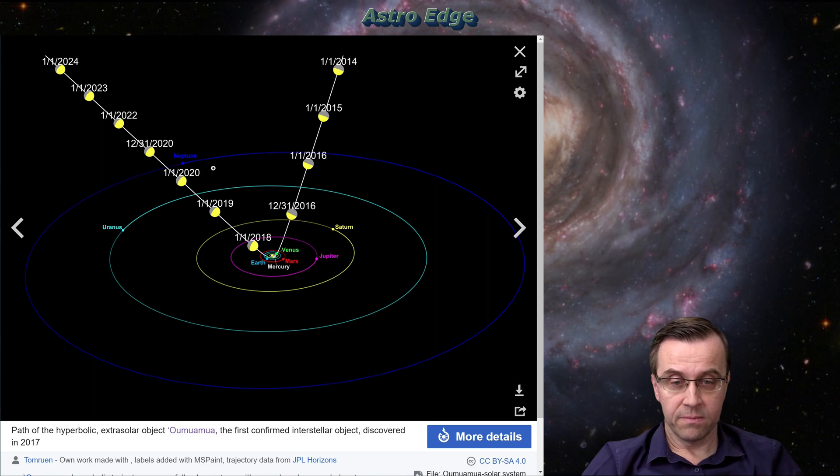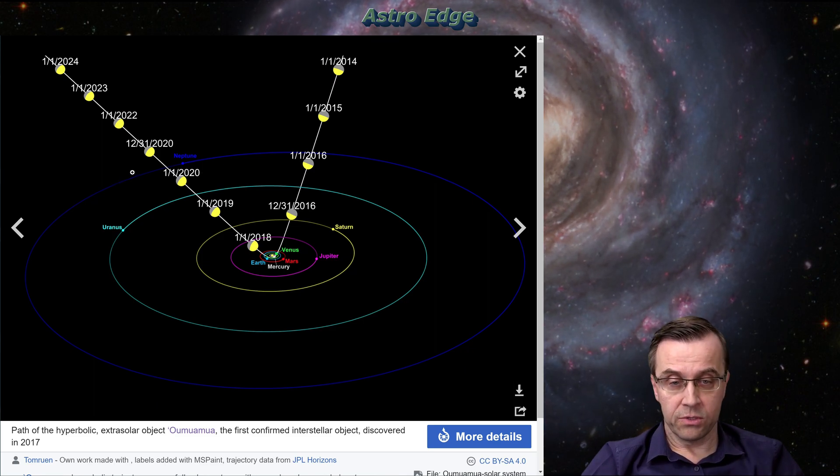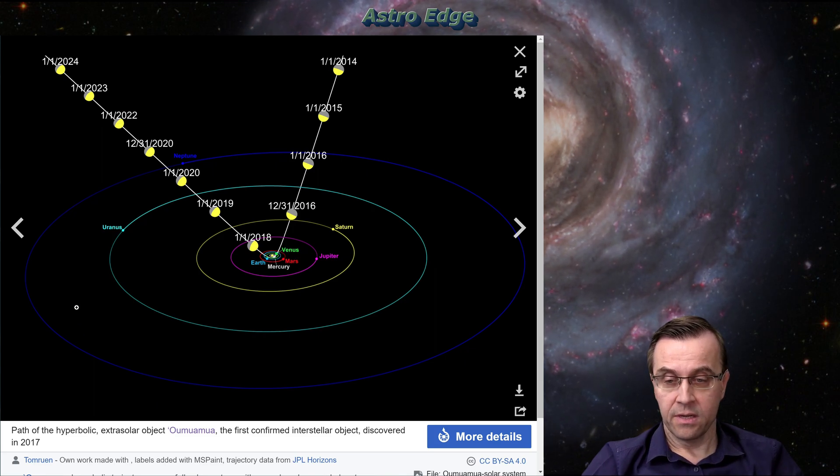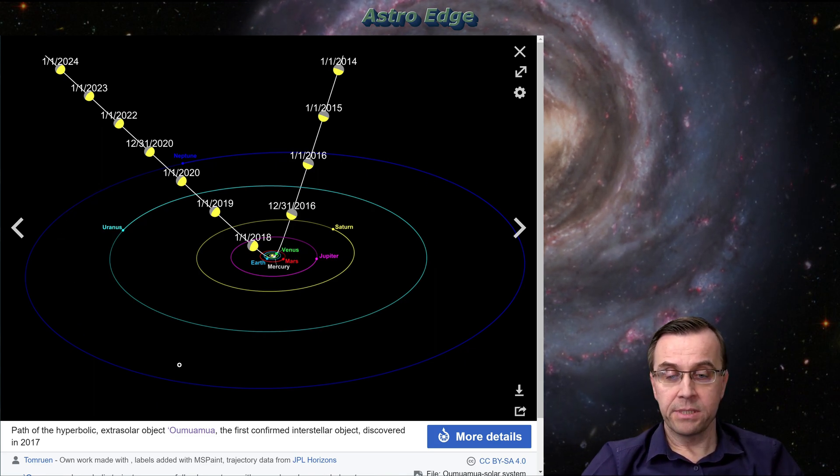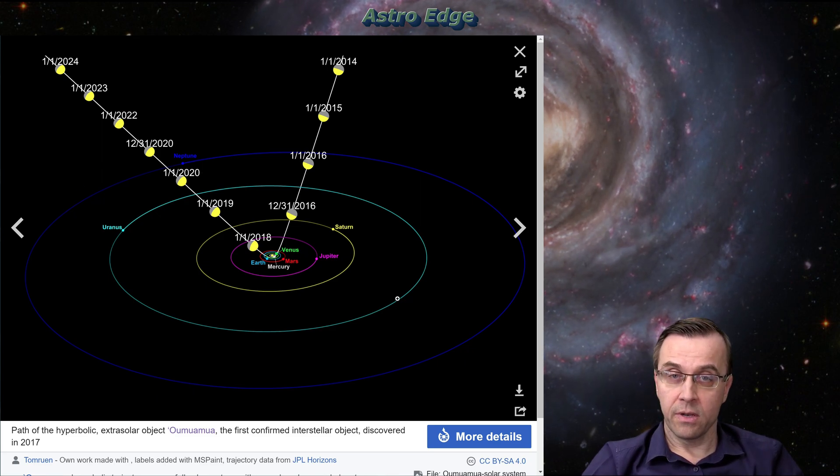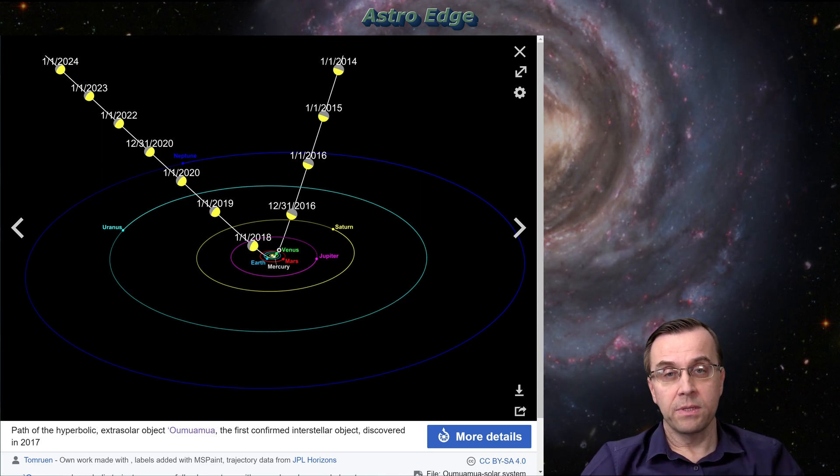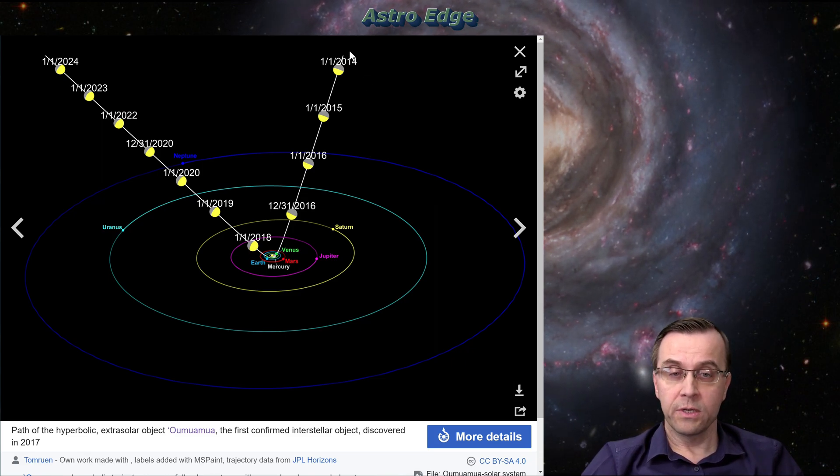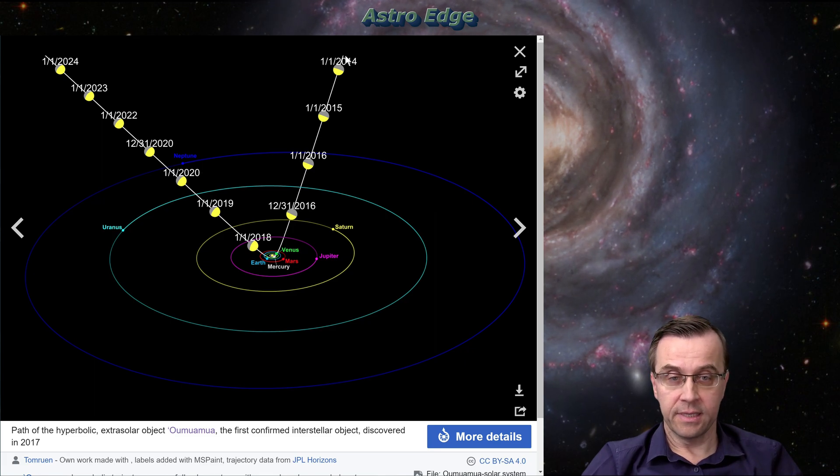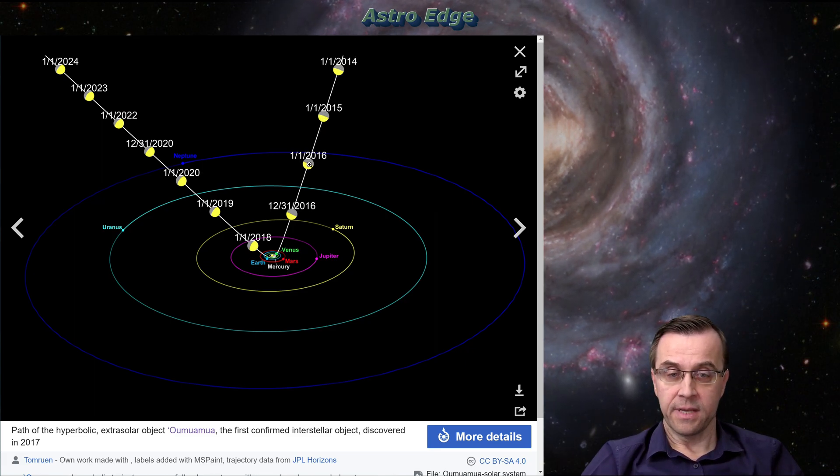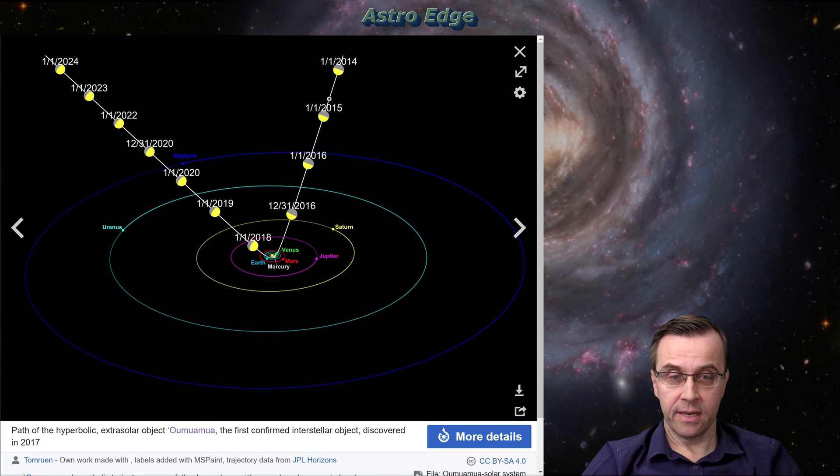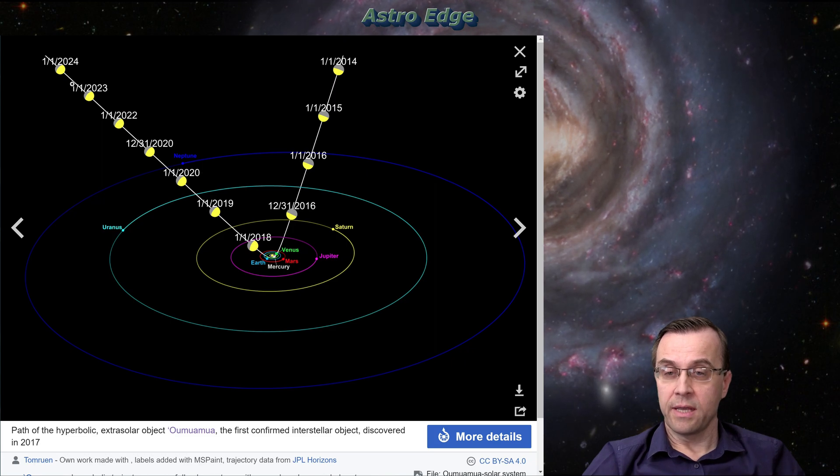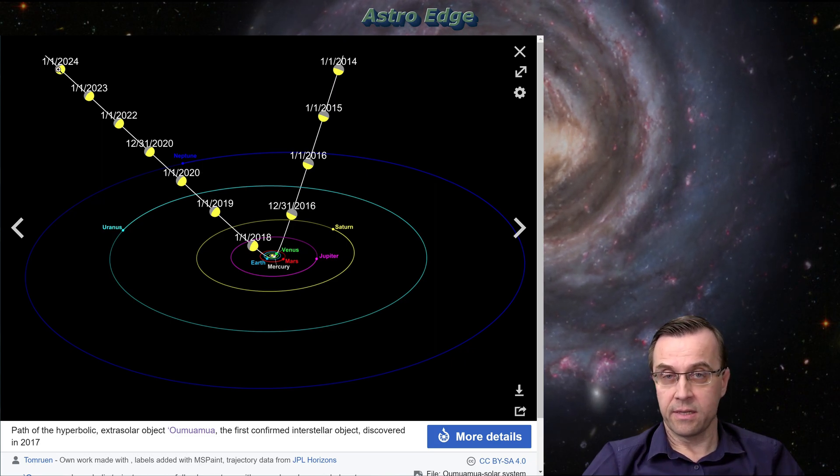As you can see from this diagram, objects which are part of our solar system are orbiting Sun, which is at the center here, following elliptical orbits. Some of these orbits are almost circular, like Earth orbit. Other orbits are more elongated or elliptic, like comet orbits. Oumuamua orbit was nothing like that. As you can see here, it came in at such a high speed that it was moving essentially at a straight line. Then it passed close to Sun, made a U-turn and moved out into the interstellar space, again almost at a straight line.